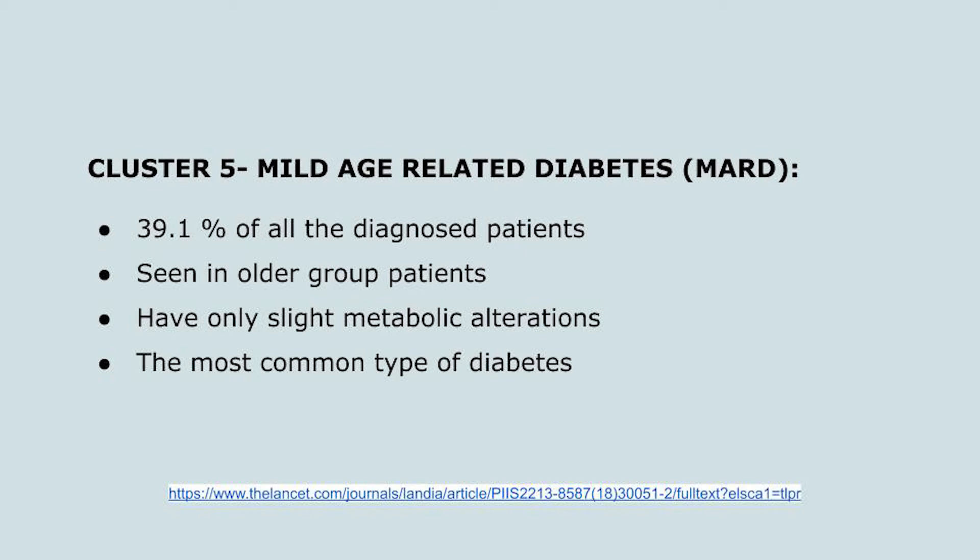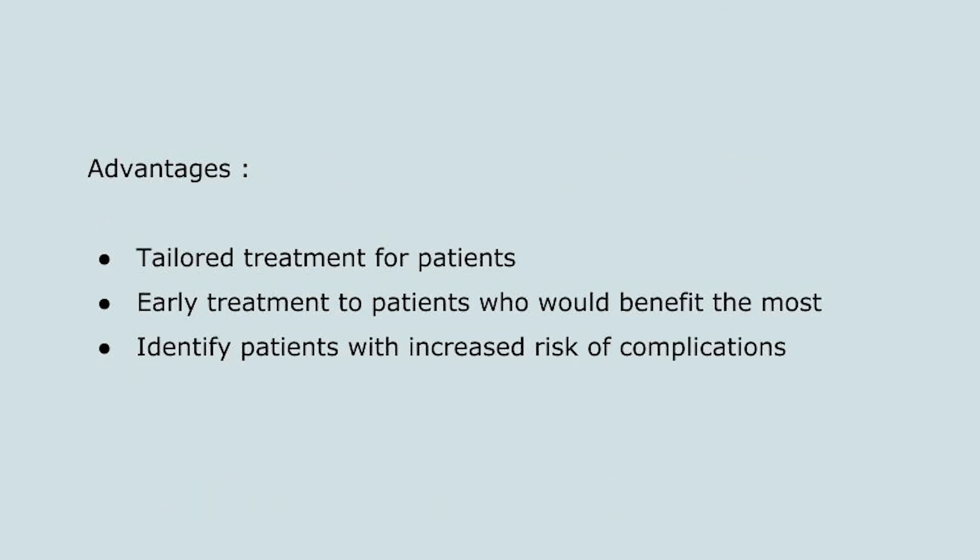Cluster 5, mild age related diabetes, was the largest group — 39.1% of all diagnosed patients. Seen mainly in older age groups, these patients had only slight metabolic abnormalities, making it the mildest form among the five clusters.